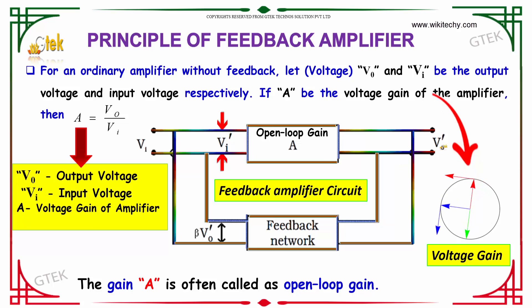So V0 is the output voltage, Vi is the input voltage, and A is the voltage gain of the amplifier. The gain A is often called the open-loop gain.